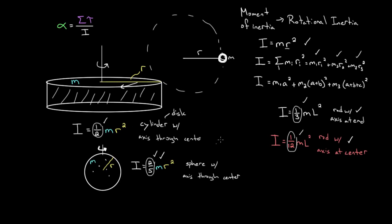If you ever forget any of these formulas, there's often a chart in your textbook, or you can look up the chart online — they're all over the place. There are lists of moments of inertia for commonly shaped objects, and make sure you check that it's the axis you're concerned with.